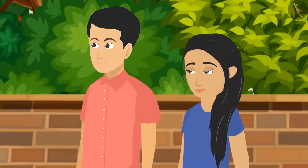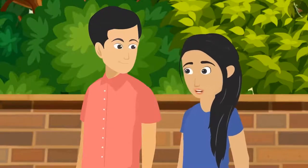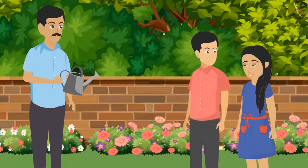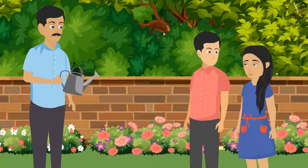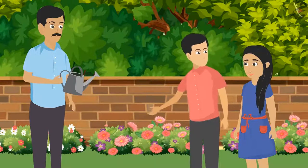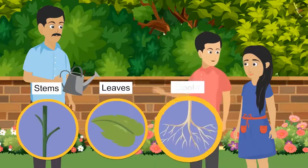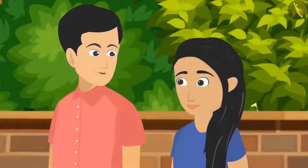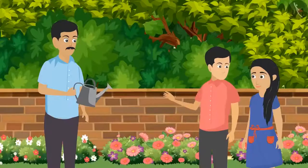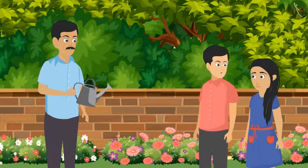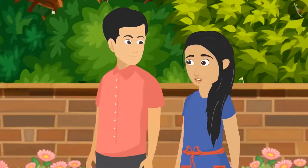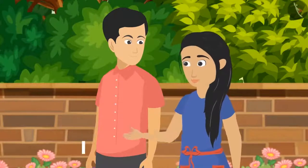Pushpa reminds Pankaj that they had already discussed types of plants and now they should discuss the parts of plants. Pankaj says the main parts are stem, leaves, roots, and flowers. They recall that each type of plant has different types of stems.